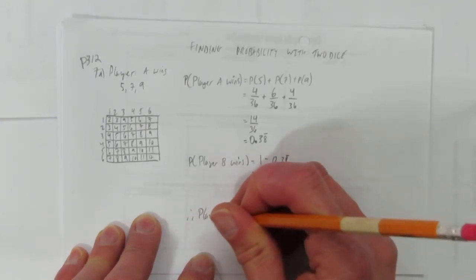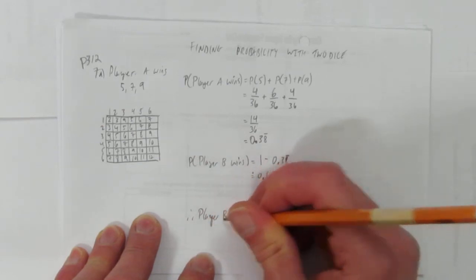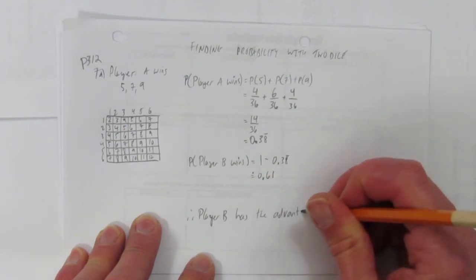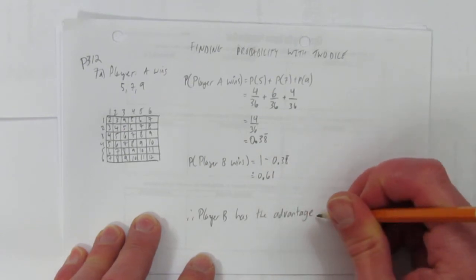therefore, player B, by far, has the advantage. So this is an example of how to find probability using two dice.